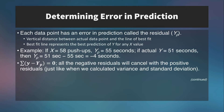Remember that the prediction is not perfect — there will most likely be some positive or negative residual, which we call the error in the prediction. The residual is determined by the vertical distance between the actual data point and the line of best fit. For example, if x is 58 push-ups, the predicted y is 55 seconds, but if the actual y was only 51 seconds, that's a negative four-second residual. In the dataset, all negative and positive residuals cancel each other out because the line of best fit minimizes the residuals across all data points.